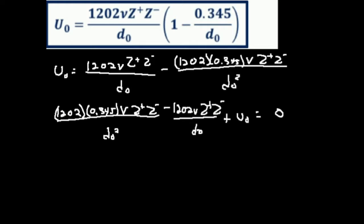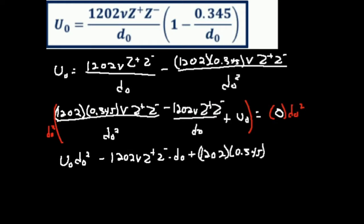How do you deal with the quadratic formula when everything's in the denominator? Well, the way we get around that is we're just going to multiply this whole thing times D0 squared. When we do that, the D0 squared is going to be multiplied by U0, so we're going to get U0 times D0 squared. This D0 squared is going to cancel with one of the D0s here, leaving minus 1202 V Z+ Z- times D0. And then this D0 squared completely cancels, so you're left with plus 1202 times 0.345 times V times Z+ times Z-, and that equals 0.